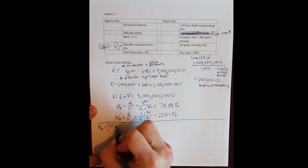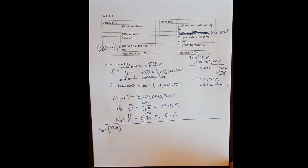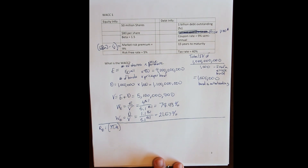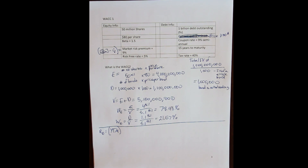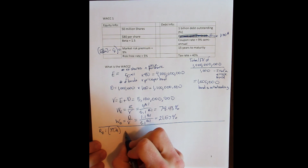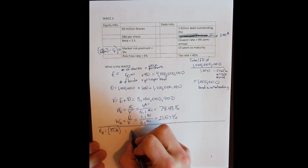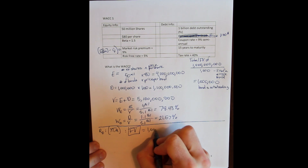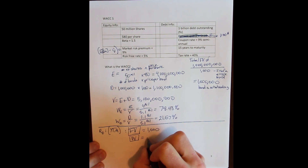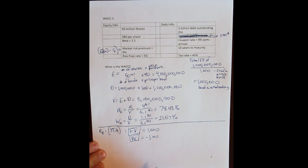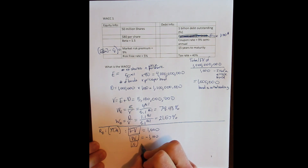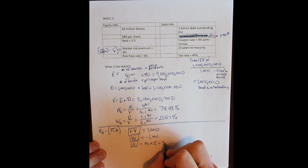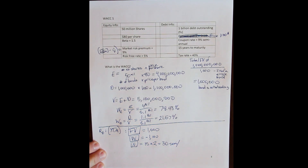Remember that the cost of debt is the yield to maturity on the firm's outstanding bonds — the coupon level a firm would have to pay if they issued a new bond today. Yield to maturity means solving for I/Y. The face value is always $1,000, the price is $1,100, and there are 15 years to maturity. Since this is a semi-annual bond, we multiply by two to get 30 semi-annual periods.